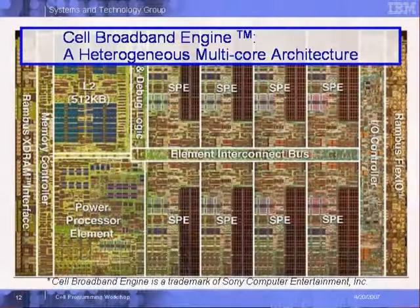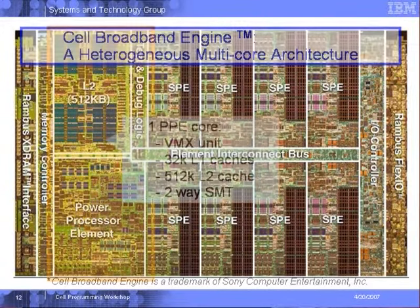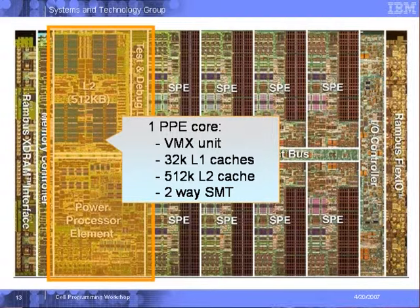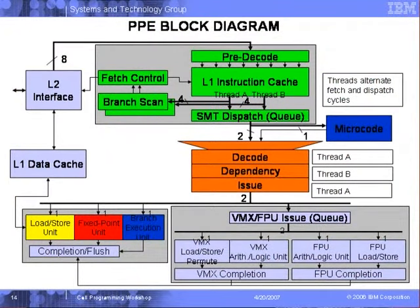This is the overall view of the Cell processing engine. We have a Level 2 cache and SPEs. Looking at the PPE core, we have VMX units, Level 1 cache, Level 2 cache, and 2-way SMT. This is the block diagram of the PPE: we have the full flow of instruction units, VMX units, load and store units, fixed point units, branch execution units, and fixed point units mixing with load and store execution units.